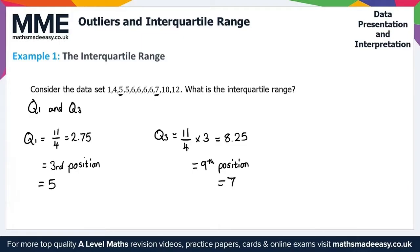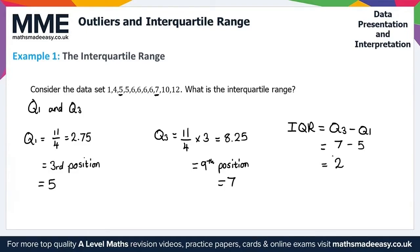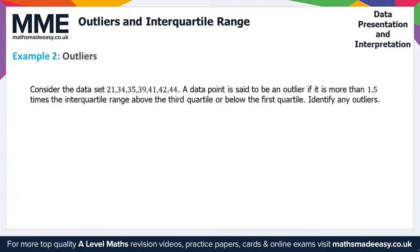The upper quartile is 7. For the interquartile range (IQR), we calculate Q3 minus Q1, which is 7 minus 5, giving us an IQR of 2 for Example 1.